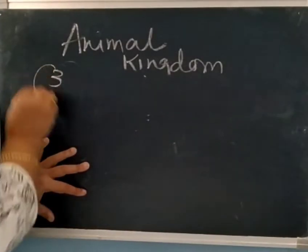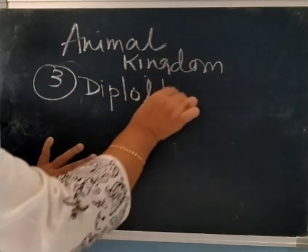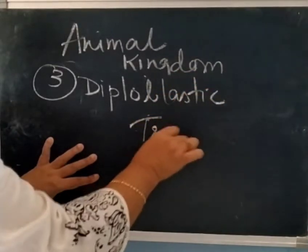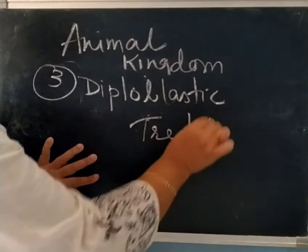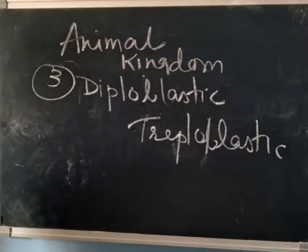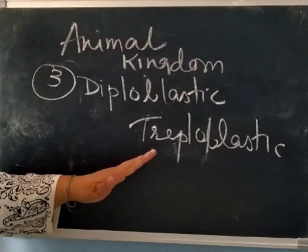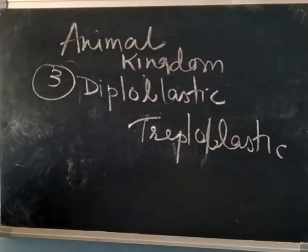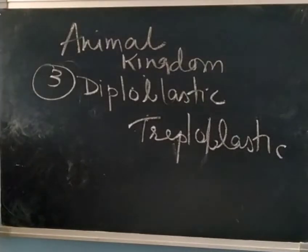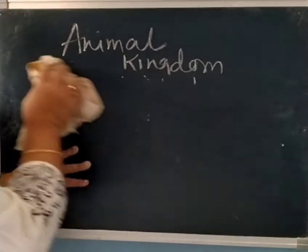The third point is whether a body is diploblastic or triploblastic. Diploblastic animals have cells arranged in two embryonic layers: external ectoderm and internal endoderm. When ectoderm, mesoderm, and endoderm — all three layers — are present, it is called a triploblastic animal. These three layers are the germ layers, which we will discuss further in the online class.